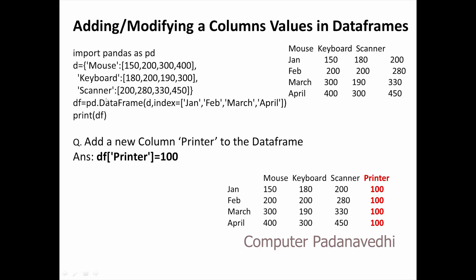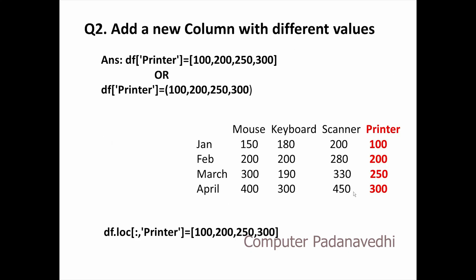Then we will add this data to the DataFrame. This is the value of the printer column — the value is 100. The value can also be 1,000 or different values like 2,000. In the first example, we use df['printer'].